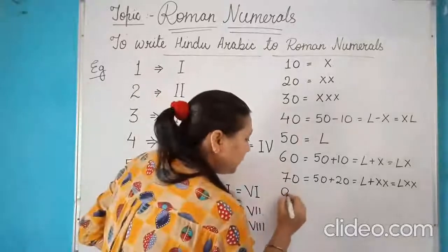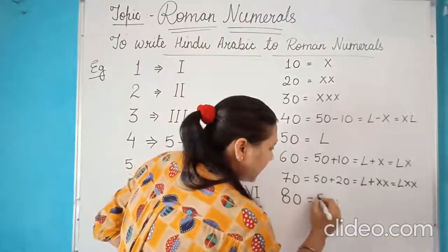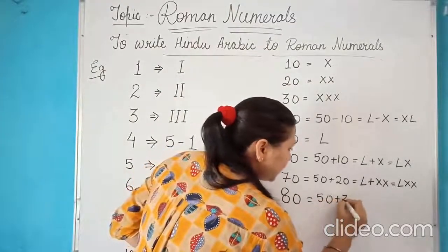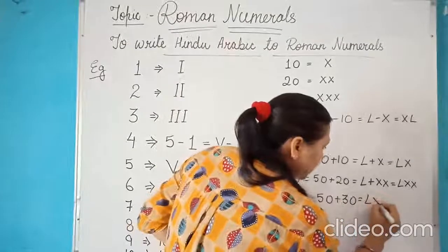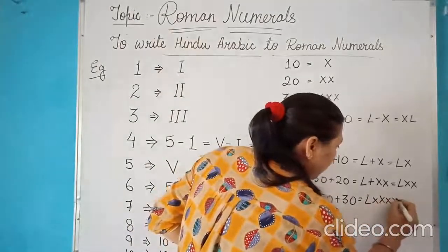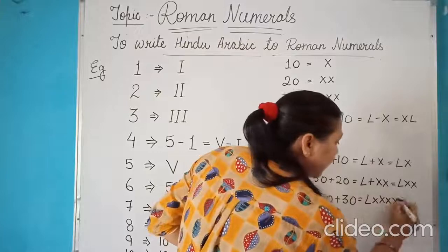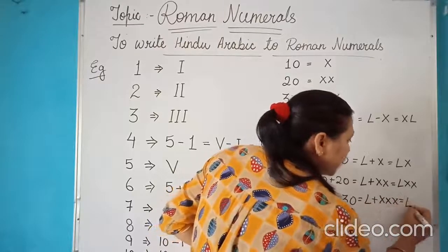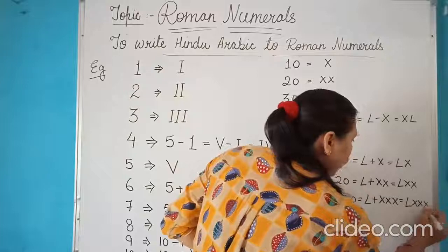Now, with the same, if it is 80, then it is 50 plus 30. So that is L plus XXX. So that is LXXX.